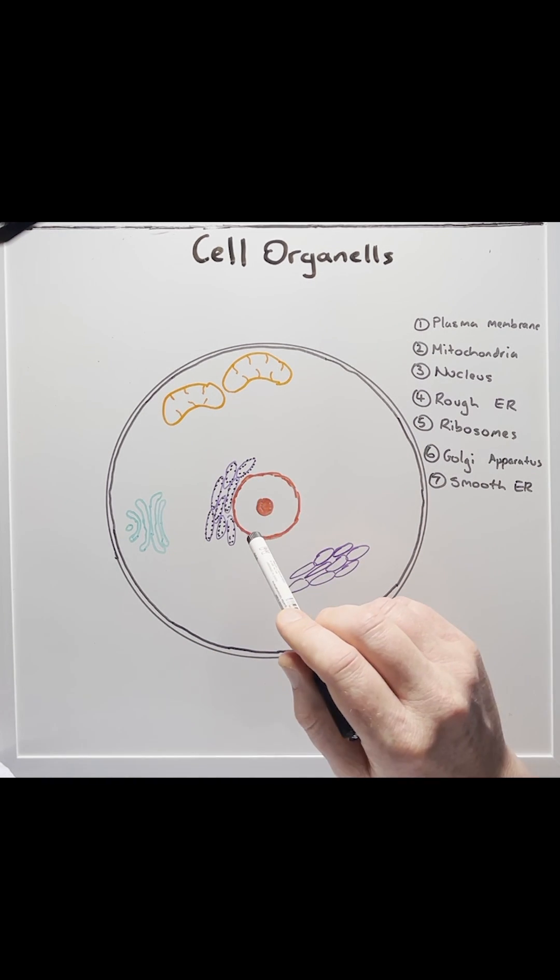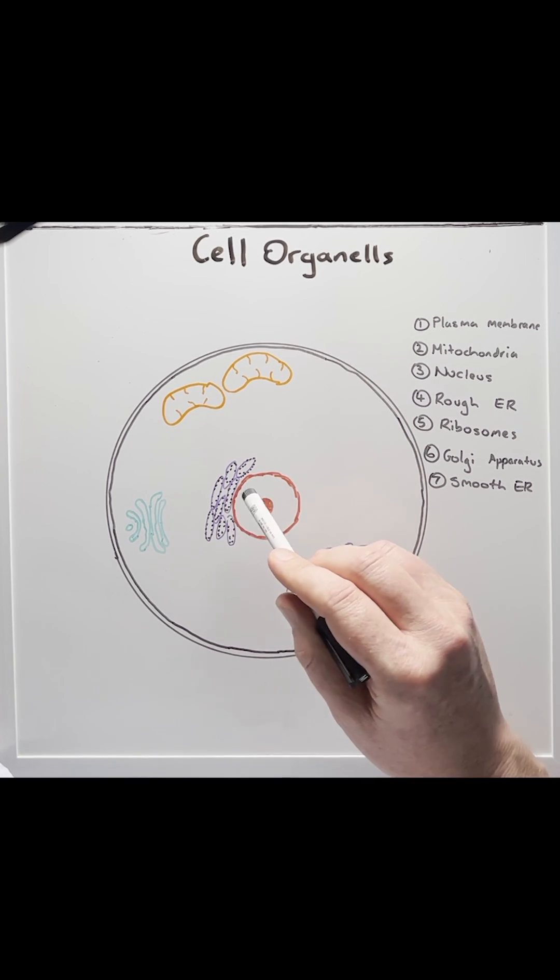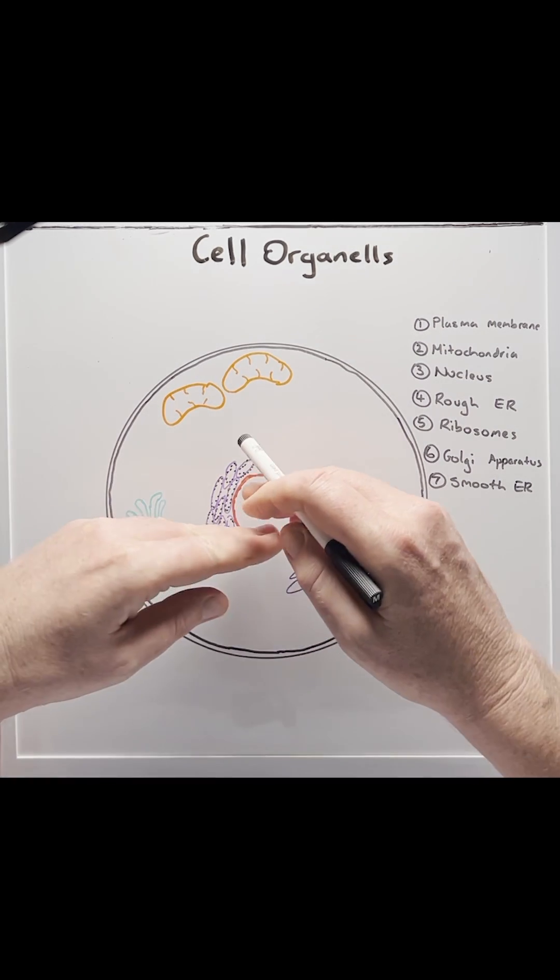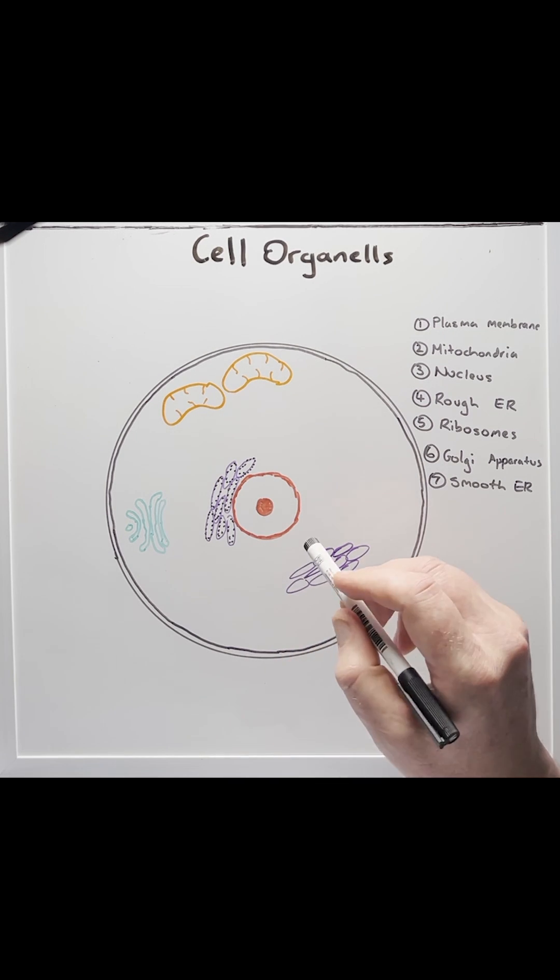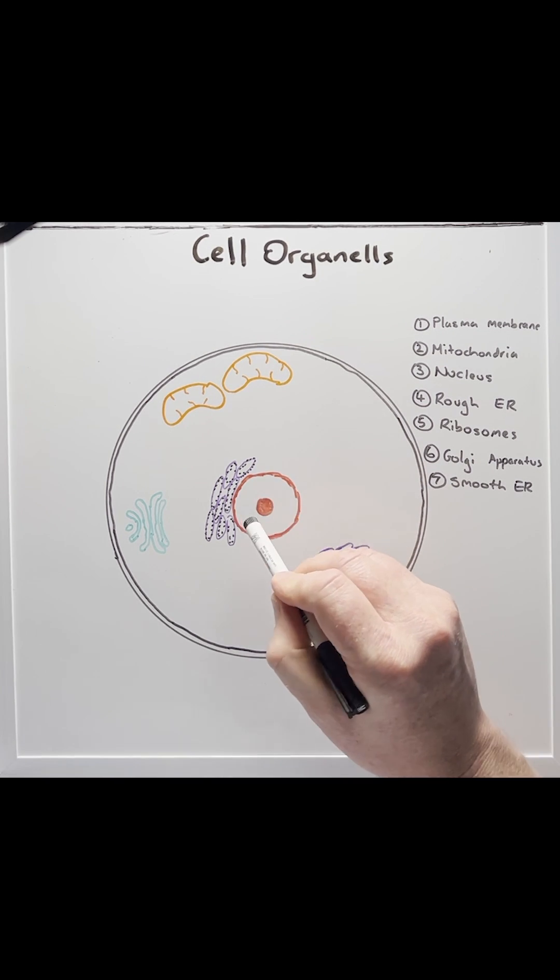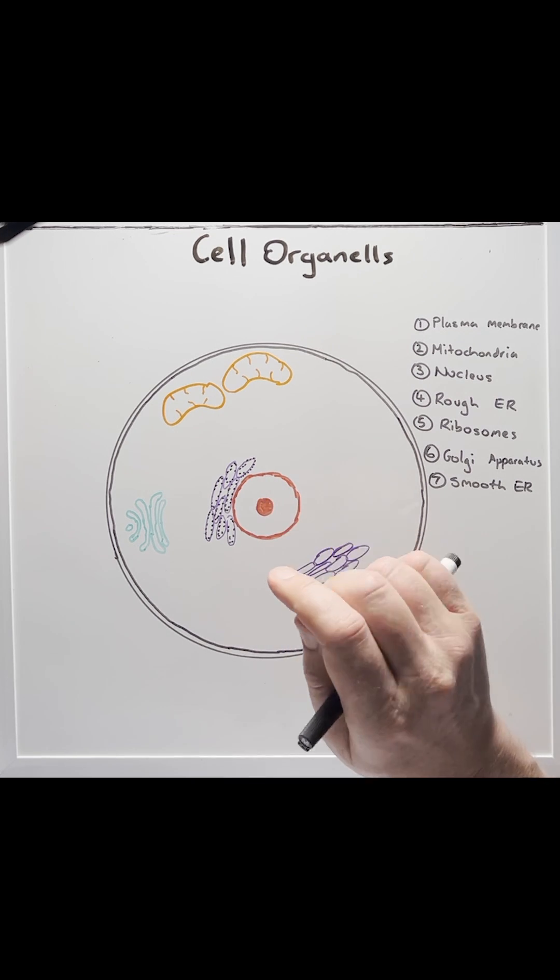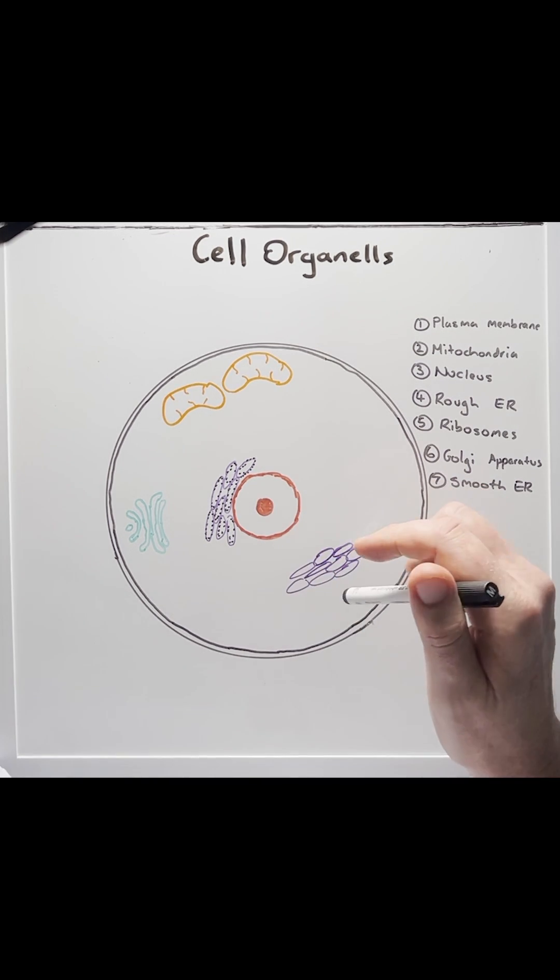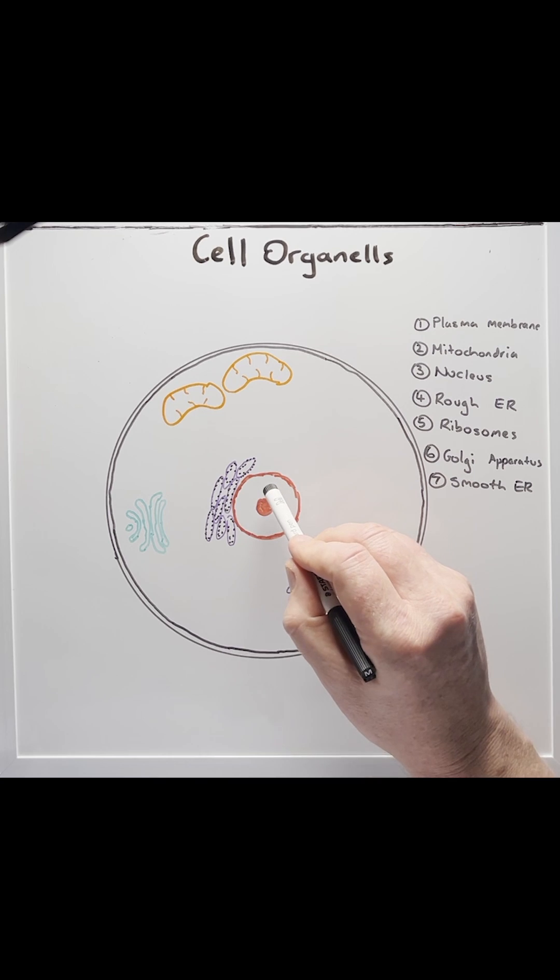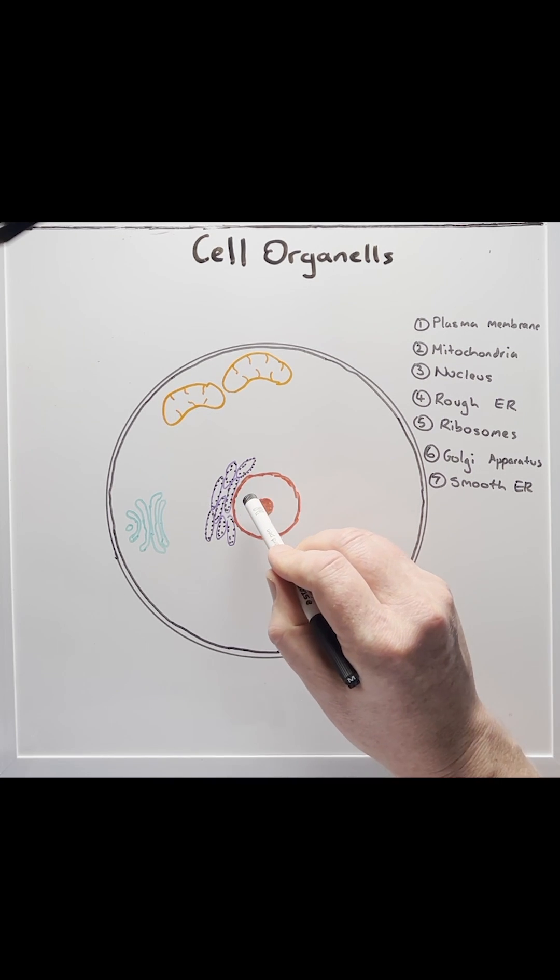Number three, the nucleus. This is the library. So this houses our DNA. Our DNA in each cell could be stretched out to be two meters in length. So it needs to be compacted really well in the nucleus in the form of chromosomes. The DNA can be chunked into genes, which help to make proteins. It's here that the DNA is transcribed into RNA.